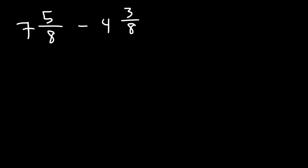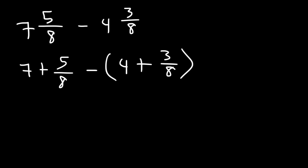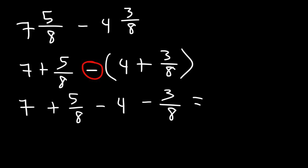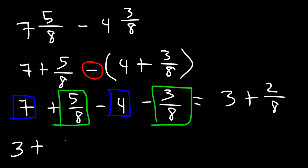It's important to understand that we can expand it like this: 7 and 5 eighths is 7 plus 5 over 8, and 4 and 3 eighths is 4 plus 3 over 8. Now we need to distribute the negative sign to the 4 and the 3 over 8. So what we have is 7 plus 5 over 8 minus 4 minus 3 over 8. Now 7 minus 4 is 3, and 5 over 8 minus 3 over 8 is 2 over 8.